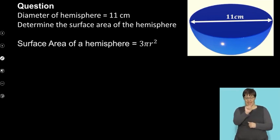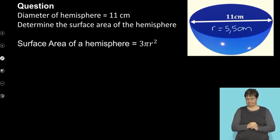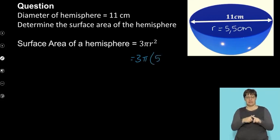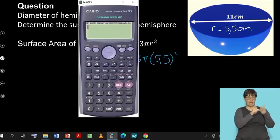So we are first going to be calculating the surface area of this hemisphere. Please note that I've given you the diameter as 11 centimeters, but my formula calls for the radius. So that means that my radius will have to be half of my diameter, which is going to be 5.5 centimeters. So at this point, I can fill it into my formula because it's going to be 3π times 5.5².